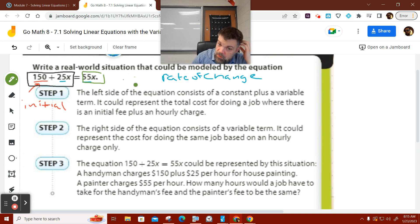So I'll read the words. The left-hand side of the equation consists of a constant plus a variable term. It could represent the total cost of doing a job where there is an initial fee plus an hourly charge. The right-hand side of the equation consists of a variable term. It could represent the cost of doing the same job based on an hourly charge only.